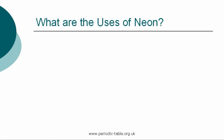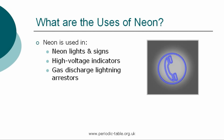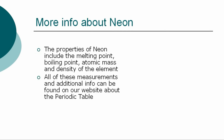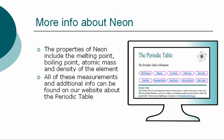Once the properties of an element have been established, we then have the ability to identify how it can be used. Neon is used in neon lights and signs, high voltage indicators, gas discharge lightning arrestors, and the manufacture of lasers. The properties of neon are classified by many other factors, including the melting point, boiling point, atomic mass, and density of the element. All of these precise measurements, together with additional facts and information, can be found on our website.